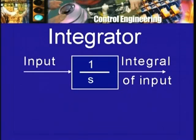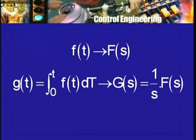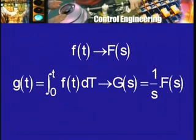This follows from a theorem of the Laplace transformation: if I have a function f of t whose Laplace transform is capital F of S, and I define another function G of t which is the integral of f from 0 up to running time t — written as integral of f tau d tau — then the Laplace transform of G of t, which is G of S, is related to F of S by the simple relation G of S equals 1 by S times F of S.